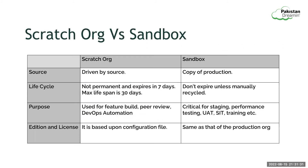Now we will compare scratch orgs with sandboxes. Scratch org is not a replacement for sandbox. Scratch org is a source-driven and disposable development environment; sandbox is a copy of production. Scratch orgs are not permanent and don't include any production data. Maximum lifespan is 30 days and the default is 7 days; sandboxes don't expire unless manually recycled. Scratch orgs are used for feature build, peer review, and DevOps automation, whereas sandboxes are critical for staging, performance testing, UAT, SIT, and trainings. The edition, license, and settings of a scratch org are based on its configuration file, but in a sandbox it will be the same as in production.